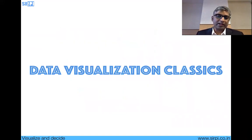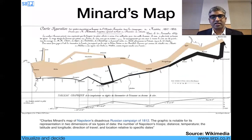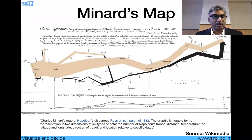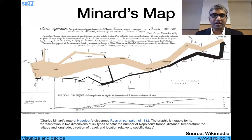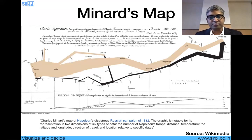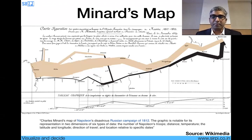I'm going to quickly run through some data visualization classics. This is a map of Napoleon's Russian campaign. From left to right, you can see how many troops went from one area to the other and how many returned. This graph is impressive because it contains several important parameters: troops, distance, temperature, latitude, longitude, and direction of travel — many complex things in one chart. This is one of the classics of data visualization.